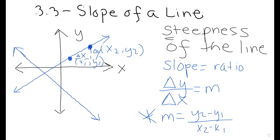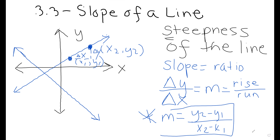You may have heard students refer to the change in y as the rise, since it goes up and down, and the change in x as the run along the horizontal axis — so rise over run. Most importantly, make sure you have this formula in your notes. The slope of a line is the steepness of the line.